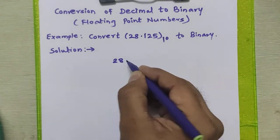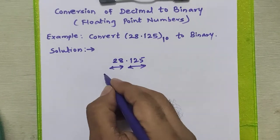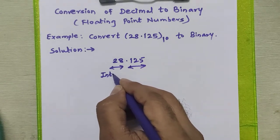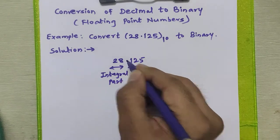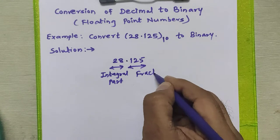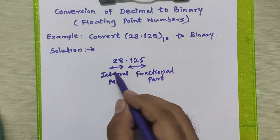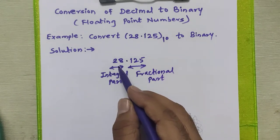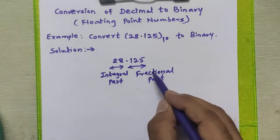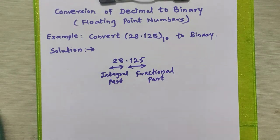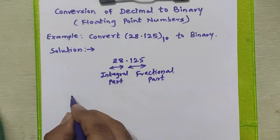The first thing to see is that in the given number there are two parts. One is called the integral part, which appears before the decimal point, whereas after the decimal point we have the fractional part. We are going to apply a different procedure to convert the integral part to binary and another procedure to convert the fractional part to binary. We will first see how to convert the integral part decimal number to binary.